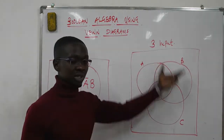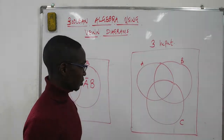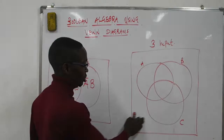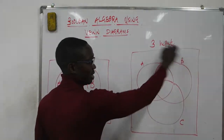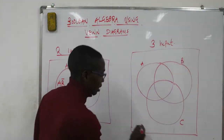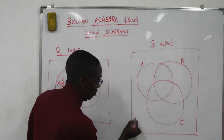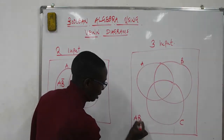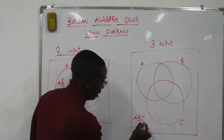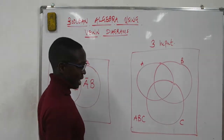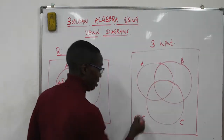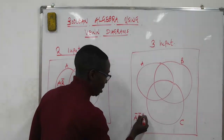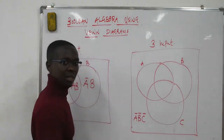For the three input diagram, the region outside the circles is a combination where A, B, and C don't appear in the outside region. So it will be A bar, B bar, C bar.